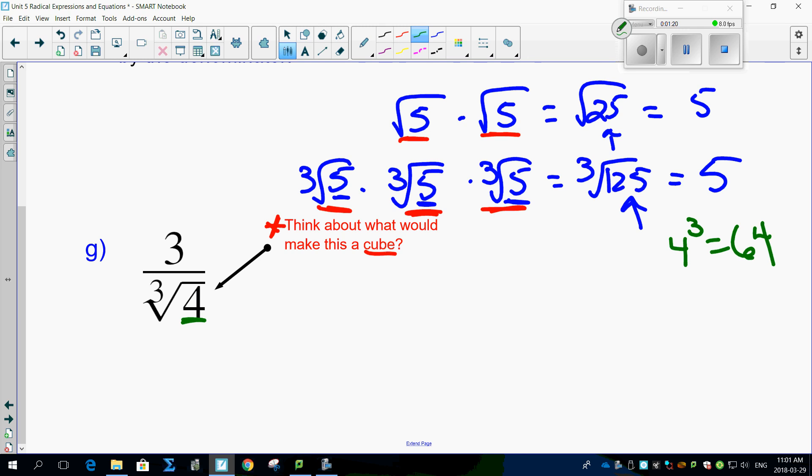What would make this 64? Well, multiplying it by cube root of 4 once, multiplying it by cube root of 4 twice. 4 times 4 times 4, it gives you your 64. See how it works?